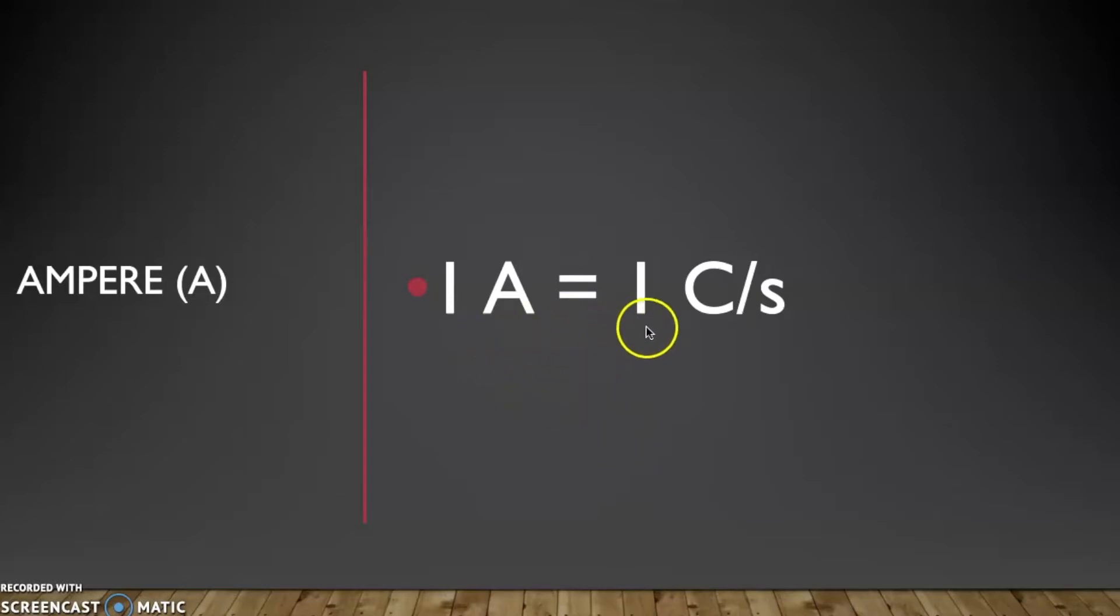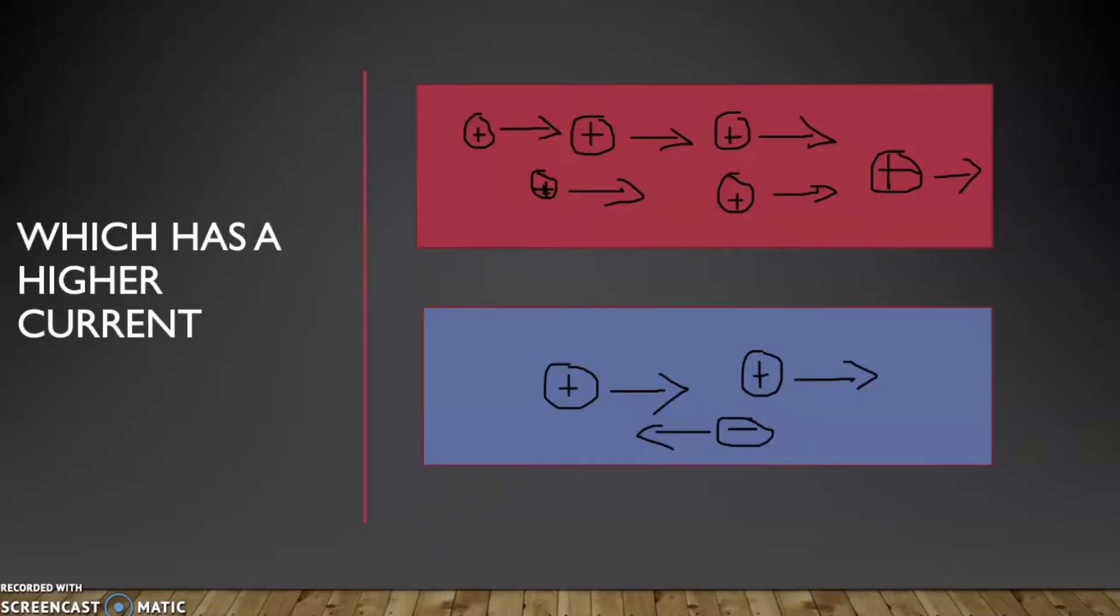So I have a question here. Given our definition, which has a higher current - is it square red or blue square? Now it's pretty easy, it's got to be square red, right?